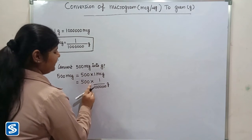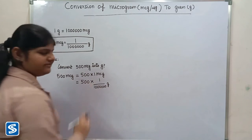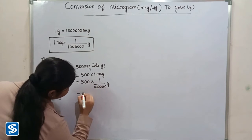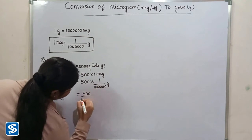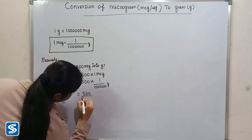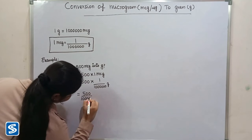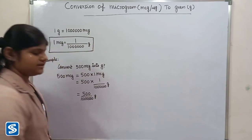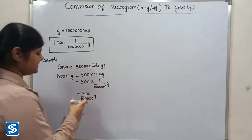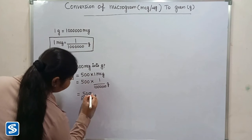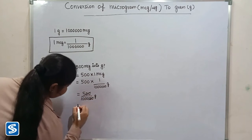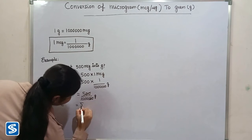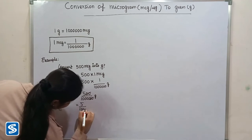Five hundred multiplied by one will be five hundred. So we have five hundred by one million grams. Here zeros and zeros get cancelled, giving us five by ten thousand grams.